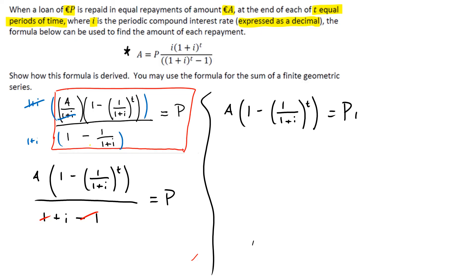We end up with A bracket 1 minus 1 over 1 plus I to the power of T equals P times I. So I've multiplied both sides by I to get rid of that I in the bottom. I'm trying to figure out A on its own.